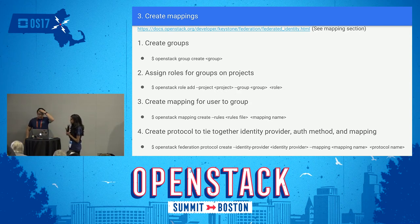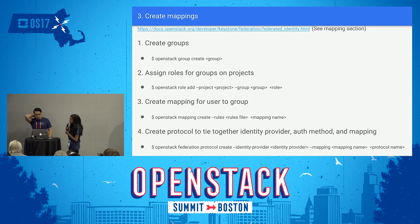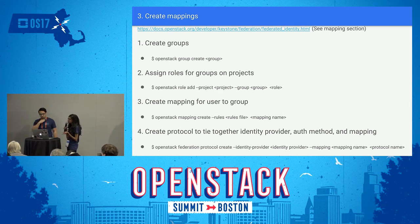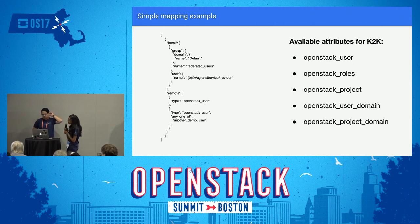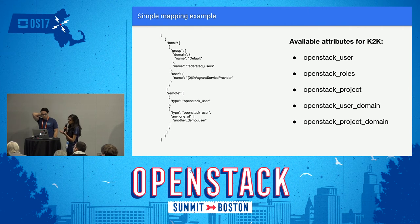After creating the identity provider, you create groups and projects as usual in Keystone, then create a mapping to define what permissions the user has. After creating the mapping, you create a protocol that ties everything together — specifying the identity provider, the protocol name, and the mapping. The SAML assertion contains attributes on the right: OpenStack user, roles, project, user domain, and project domain. Since everything is stored in the first Keystone, the username is stored as 'username at vagrant service provider' to differentiate them. Note there is no remote attribute for group, which is something to work on later.